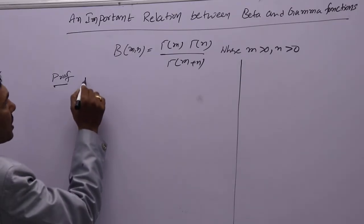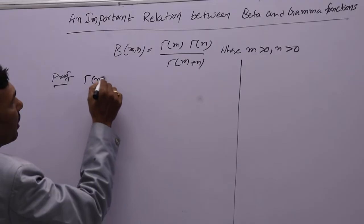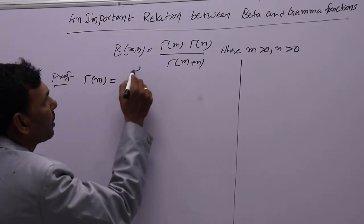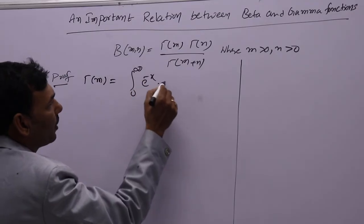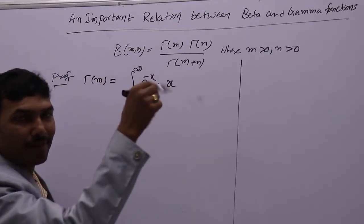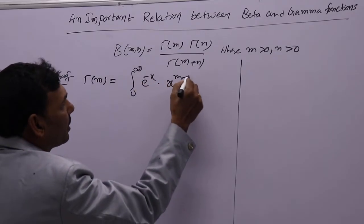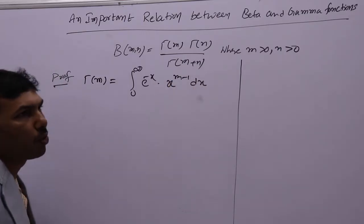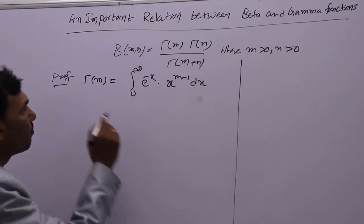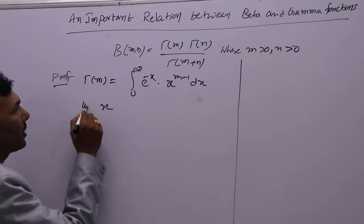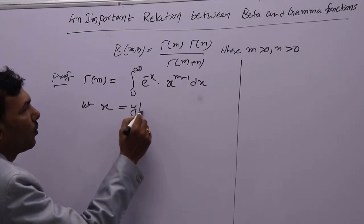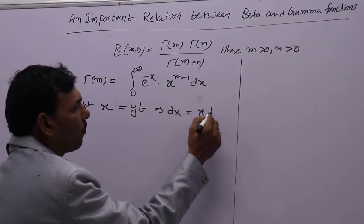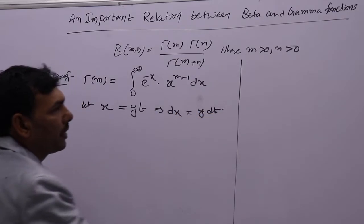To prove this, I am taking gamma(m). Gamma(m) is the integral from 0 to infinity of e to the power minus x into x to the power m minus 1 dx. To prove this one, we are taking one simple assumption: let x equal to yt, then dx will be y dt.